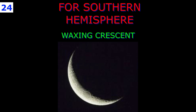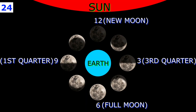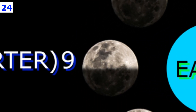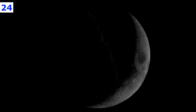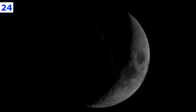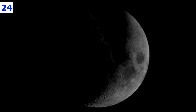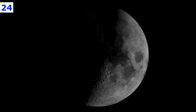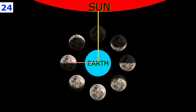The moon looks half full at the first quarter stage — so what's with the name? The term simply means that the moon is one fourth of the way through the lunar cycle. Like a new moon, the first quarter designation marks a precise moment. If you draw a line from the Earth to the sun and another from us to the moon, those lines would be perpendicular.